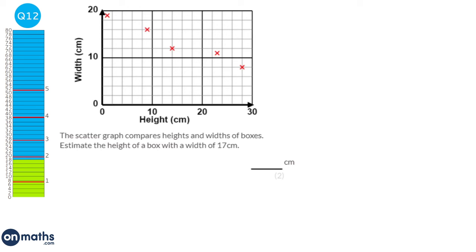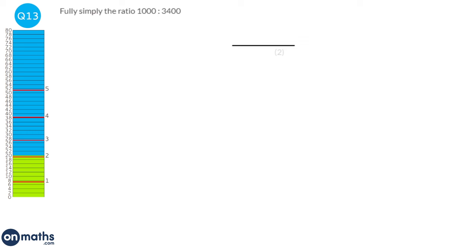Whenever we have a scatter graph, we'll likely be drawing a line of best fit, so that's what we start with. We're looking for an estimate of the height of a box with a width of 17. We draw a line up from 17 to the line of best fit, then across. Looking at the scale, which goes up in twos, this line would be at 3.